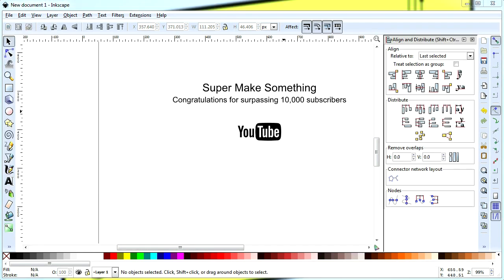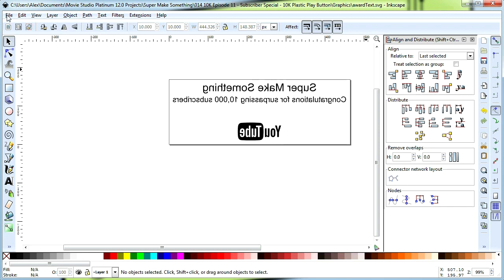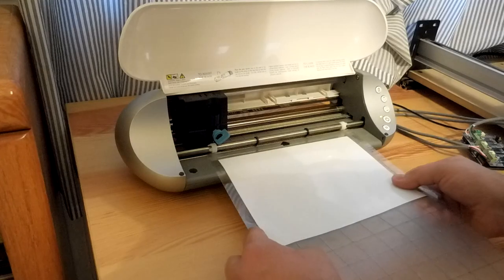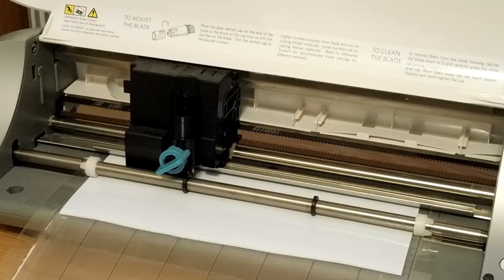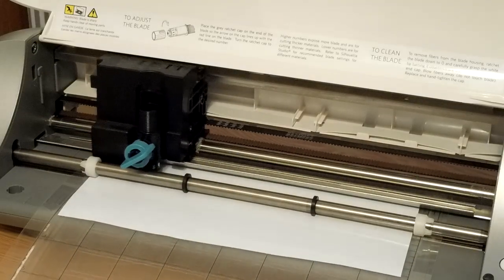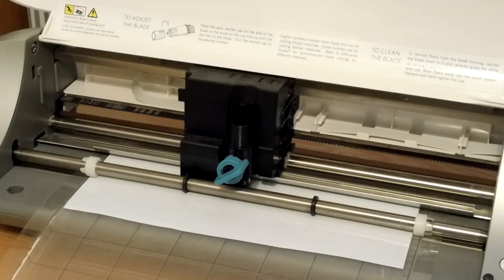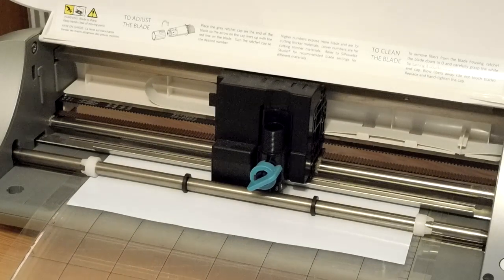Once I was happy with the look of the graphic, I mirrored everything horizontally and saved it as a PNG file. I next loaded a sheet of white vinyl into my craft cutter and cut out the design. A craft cutter is essentially a small CNC machine, which cuts out a design by moving a small knife around the perimeter of each element of the graphic.